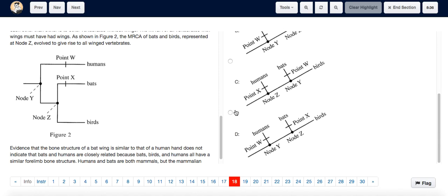Just to confirm, we can see that node Z goes to bats and birds, which also happens in option D, and point X exists on the bats line, which it does in option D as well. So the answer is D.